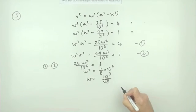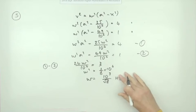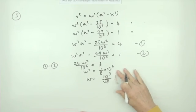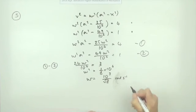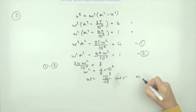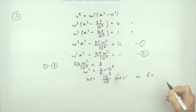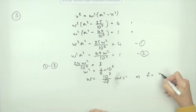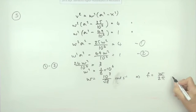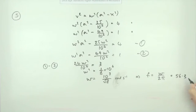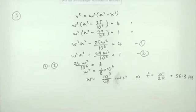So ω = 10³/√8 radians per second, and the frequency is again ω/(2π) = 56.3 oscillations per second or hertz — consistent with the division method.